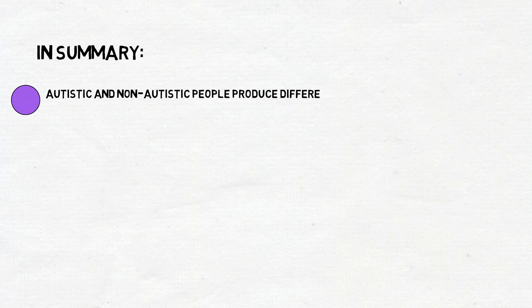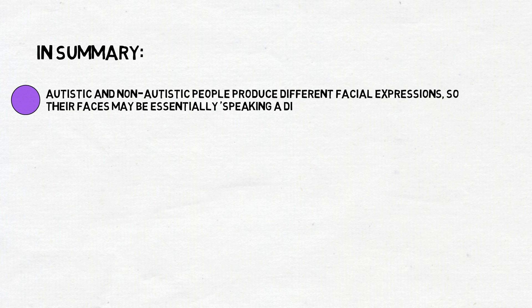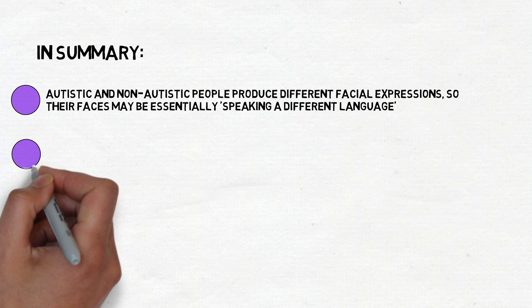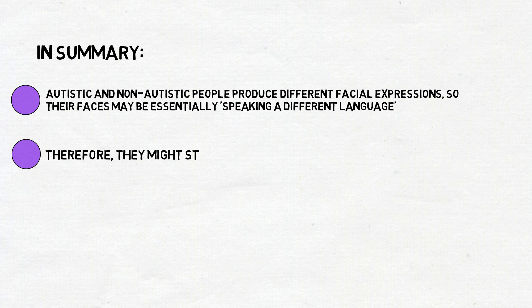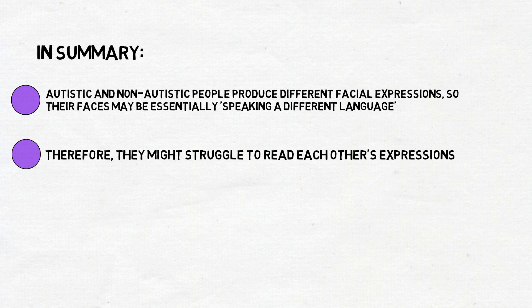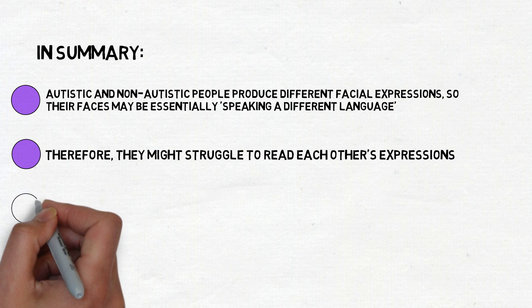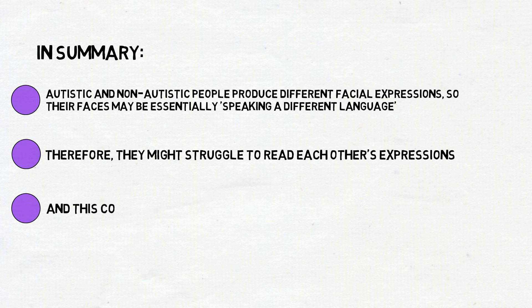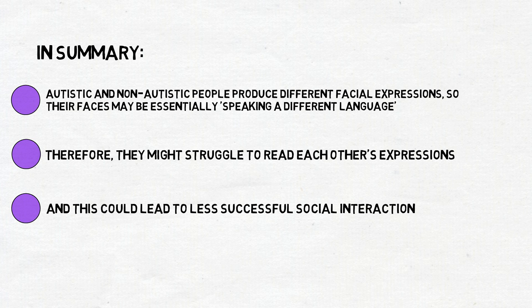In summary, autistic and non-autistic people produce different facial expressions and so their faces may be essentially speaking a different language. And therefore, they may struggle to read each other's expressions and this could lead to less successful social interactions.